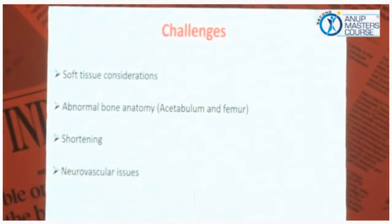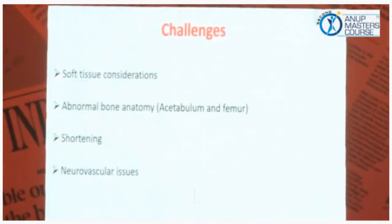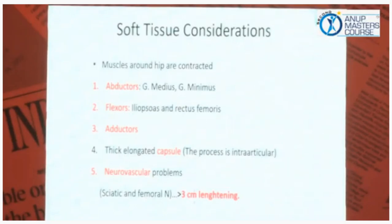What are the challenges in a dysplastic hip? We have soft tissue considerations, abnormal bone anatomy of both acetabulum and femur, shortening, and neurovascular issues. The muscles around the hip are all contracted — abductor, gluteus medius, minimus, flexors, iliopsoas, rectus femoris, adductors — and there is a thick and elongated capsule. Neurovascular problems arise if you have to increase the length more than 3 cm.